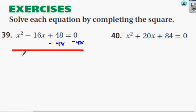So now I have x squared minus 16x equals negative 48.